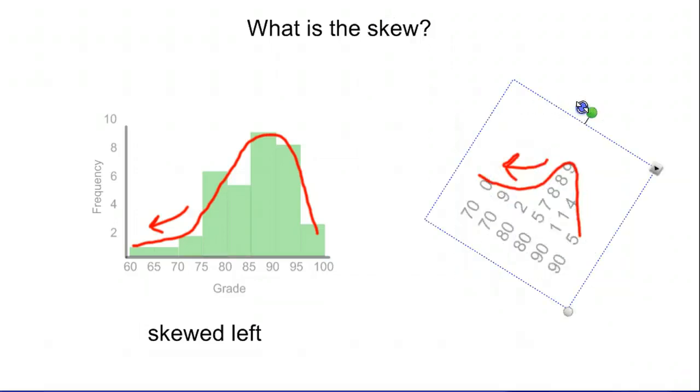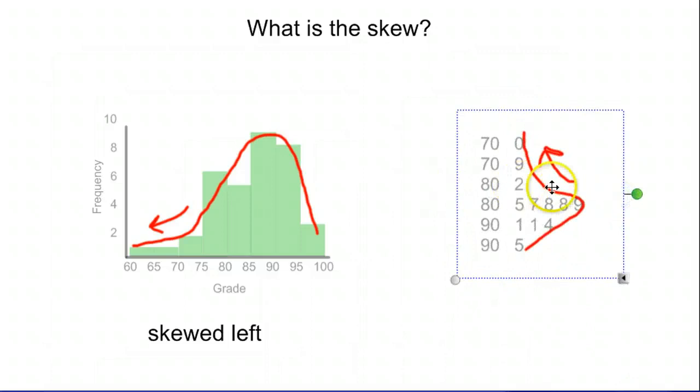So this graph would also be skewed left. And just to show you what it would look like in the original orientation where it was kind of skewed pointing up, anything that's pointing back towards the lower numbers is going to be skewed left. Pointing down towards the higher numbers would be skewed right.